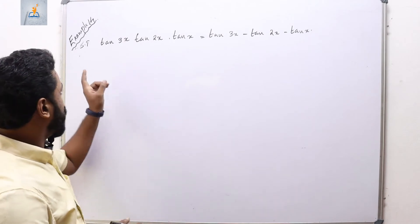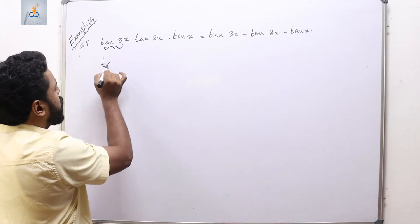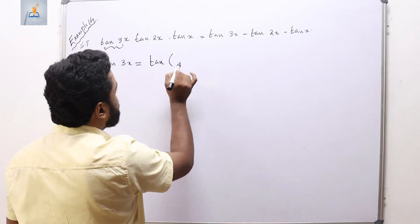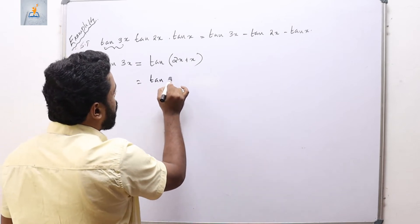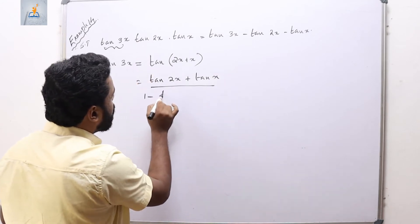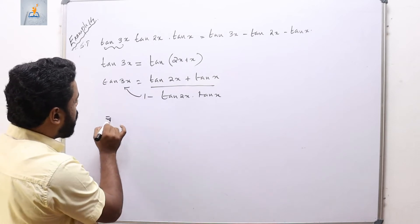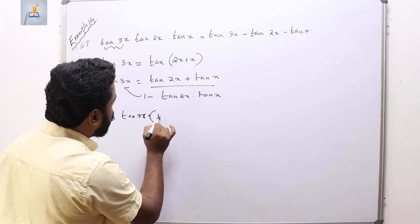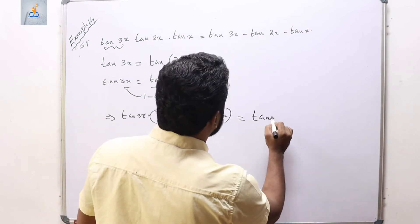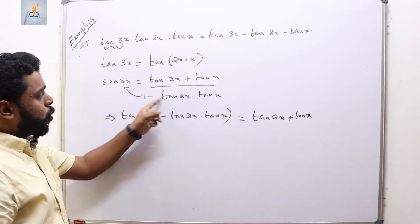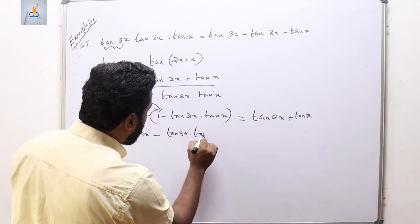Example 14: show that tan(3x)·tan(2x)·tan(x) equals the right-hand side. We split tan(3x) = tan(2x + x) and apply the formula: tan(3x) = (tan 2x + tan x)/(1 − tan 2x·tan x). Cross-multiplying: tan(3x)·(1 − tan 2x·tan x) = tan 2x + tan x, which gives tan(3x) − tan(3x)·tan(2x)·tan(x) = tan 2x + tan x.